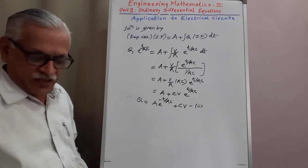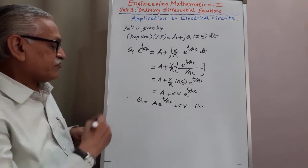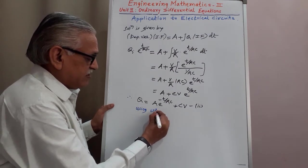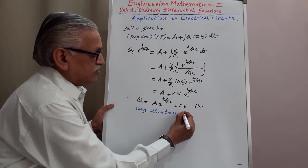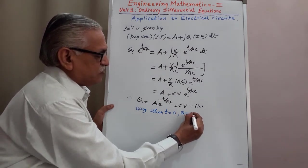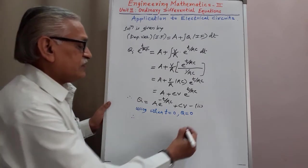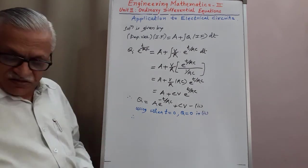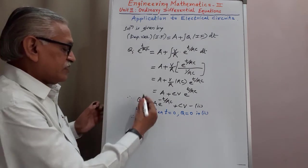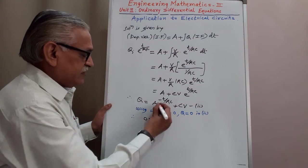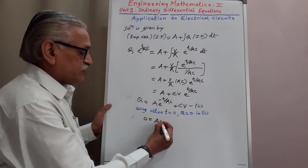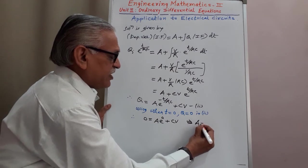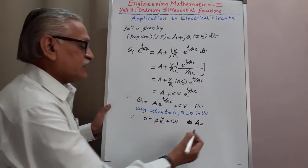To determine the value of constant A, we use the initial condition: when T equals 0, Q equals 0. Substituting into Equation 2, the left-hand side is 0, and the right-hand side gives: A times e raised to 0 plus CV, which means A plus CV equals 0. Therefore, A equals minus CV.